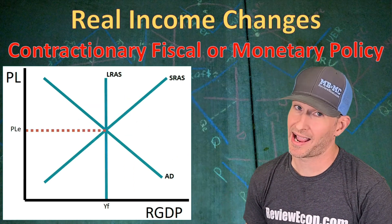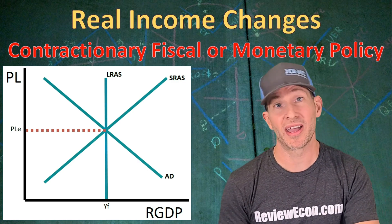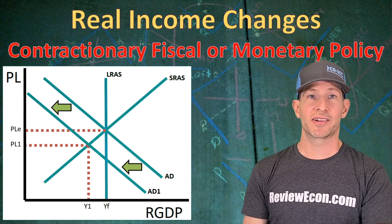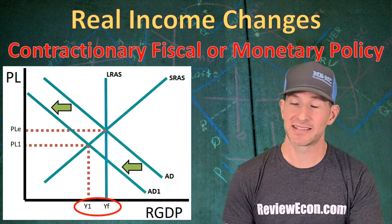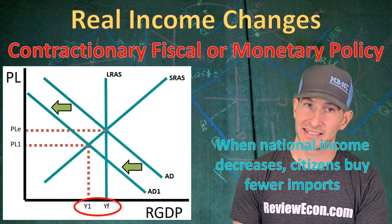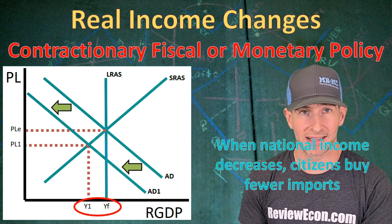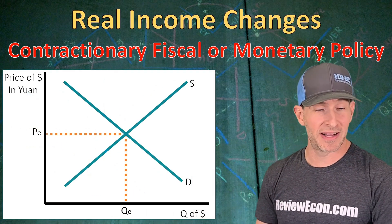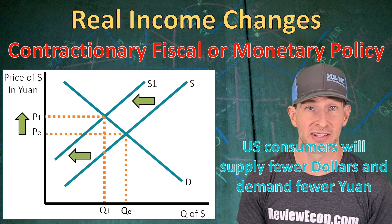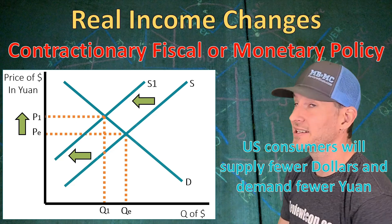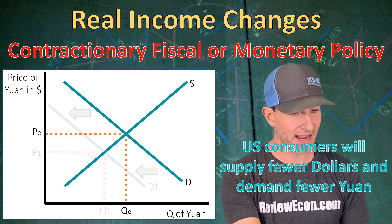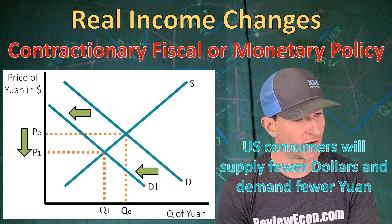Next, when it comes to contractionary fiscal and monetary policy, that is going to be a decrease in the aggregate demand curve on the AS-AD graph. With that leftward shift, we are going to see a decrease in real income — shifting from YF to Y1. With that decrease in national income, citizens are going to buy fewer imports. Over on the foreign exchange market for the dollar, that means there will be a decrease in the supply of US dollars as US consumers buy fewer Chinese-made goods, causing the US currency to appreciate. And over on the foreign exchange market graph for the Chinese yuan, we are going to see a decrease in demand, meaning the Chinese yuan is going to depreciate.